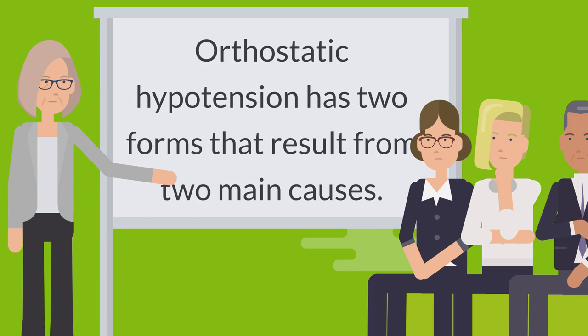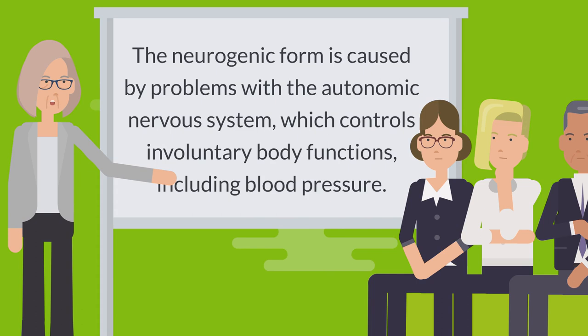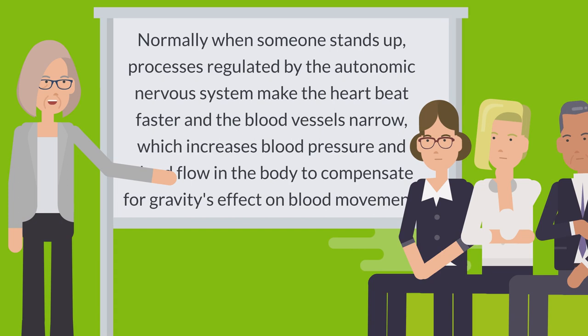Orthostatic hypotension has two forms that result from two main causes. The neurogenic form is caused by problems with the autonomic nervous system, which controls involuntary body functions including blood pressure. Normally, when someone stands up, processes regulated by the autonomic nervous system make the heartbeat faster and the blood vessels narrow.